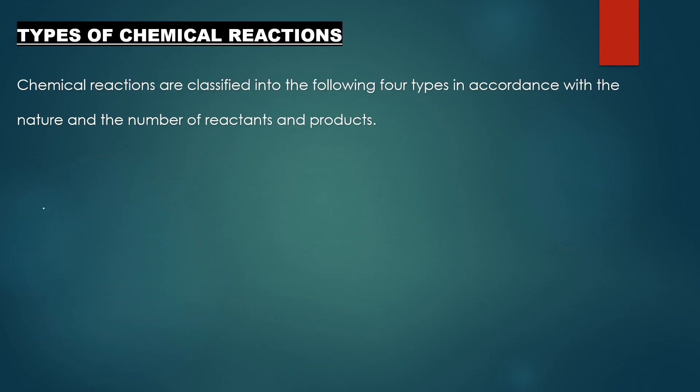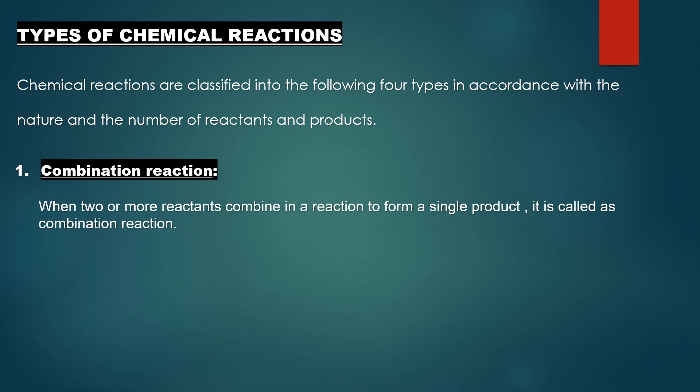Chemical reactions are classified into the following four types in accordance with the nature and the number of reactants and products. First is the combination reaction. When two or more reactants combine in a reaction to form a single product, it is called a combination reaction. Children, let us see the example here. Magnesium reacts with oxygen to give magnesium oxide.